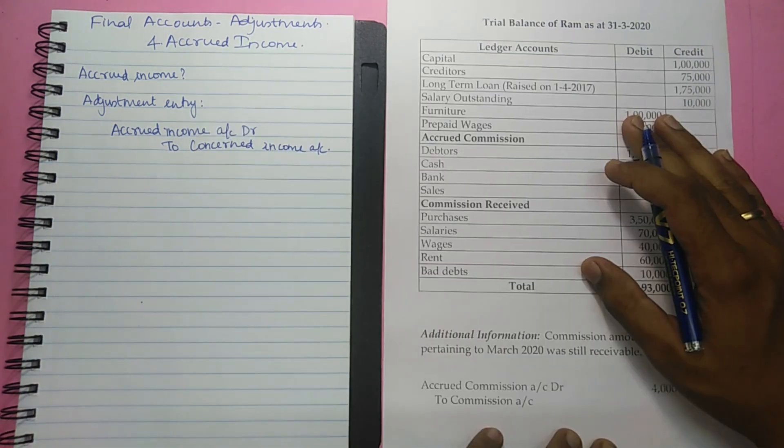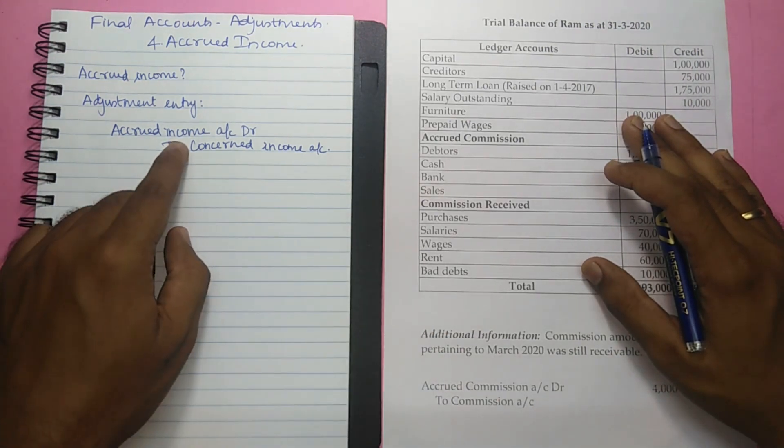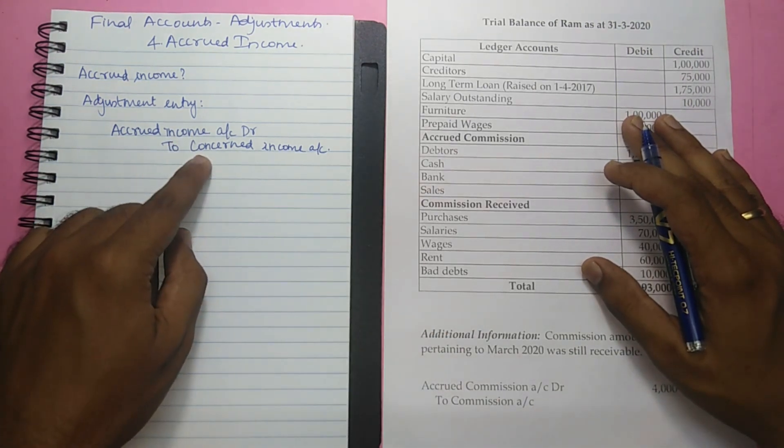Therefore the summary is to adjust accrued income, a new asset accrued income must be created and the concerned income should be increased by the amount of accrued income.